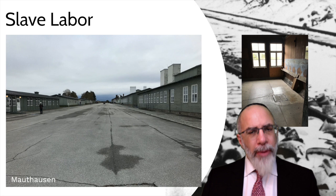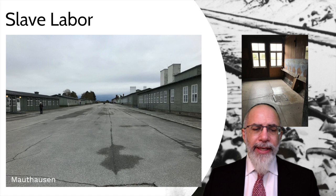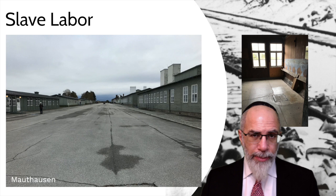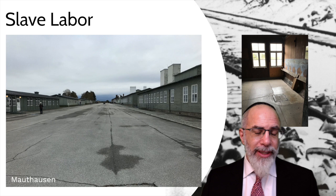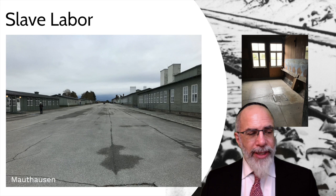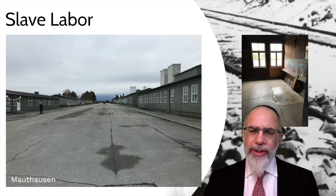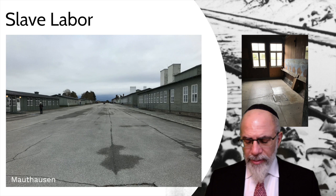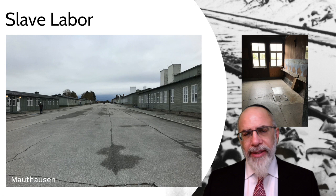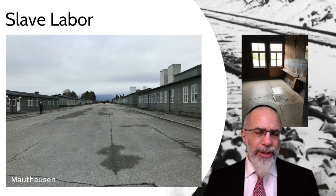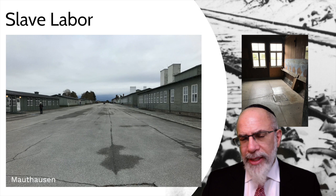Not everyone was immediately selected for death. A small percentage were set aside for slave labor, housed in barracks like those at Mauthausen. The street, by the way, is paved partially with the ashes of victims killed in the gas chambers and burned in the crematoria. Prisoners lived under incredibly horrific conditions of overcrowding, lack of sanitation, and a subsistence liquid diet that made them prone to debilitating diarrhea and dehydrating dysentery. The Nazis regarded slave labor as highly replaceable, preferring to simply maltreat them until they expired.